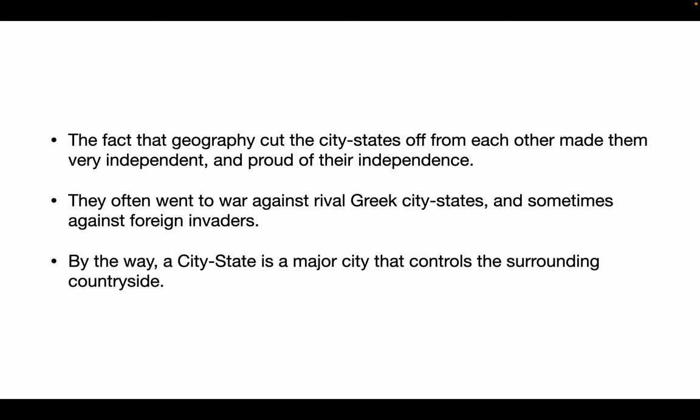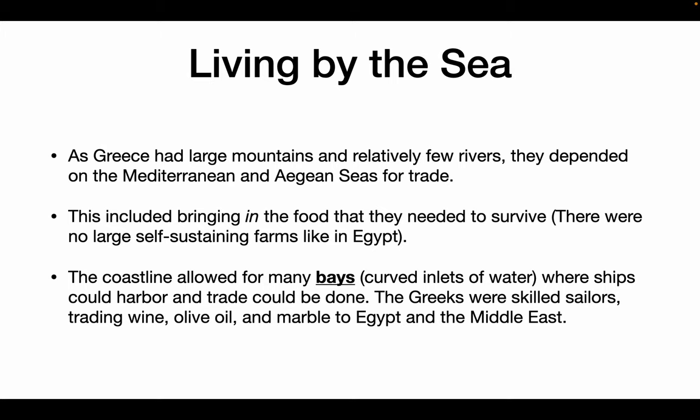They did not trust each other. One of the only things that could really bring them together is if they were being invaded by somebody else. A city-state is a city that controls the surrounding area. In Greece, that is known as a polis. As Greece had a lot of large mountains and very few rivers, they depended upon trade. They didn't have a lot of rivers to make fertile farming cities, so a lot of the stuff that they needed, like food, was gotten by trade. The coastline allowed for many bays where ships could harbor and trade could be done, so the Greeks were big into sailing and trading.